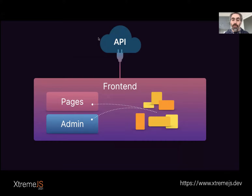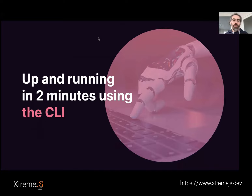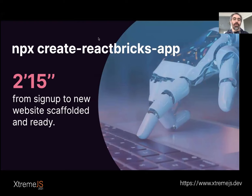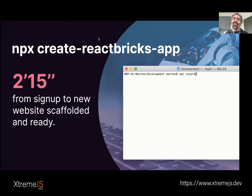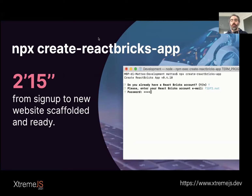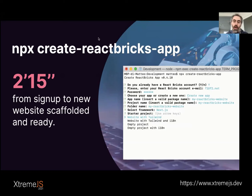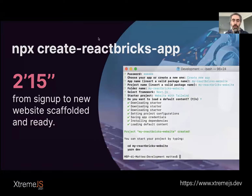You can be up and running in two minutes with React Bricks using our CLI to scaffold the project — NPX create-reactbricks-app. We measured that from sign-up to launching the CLI and having a new Next.js website scaffolded with all dependencies installed took about two minutes. When you launch it, you authenticate, choose an existing or new app, pick the framework and starter project — like Next.js with Tailwind — optionally load default content, and you're good to go.